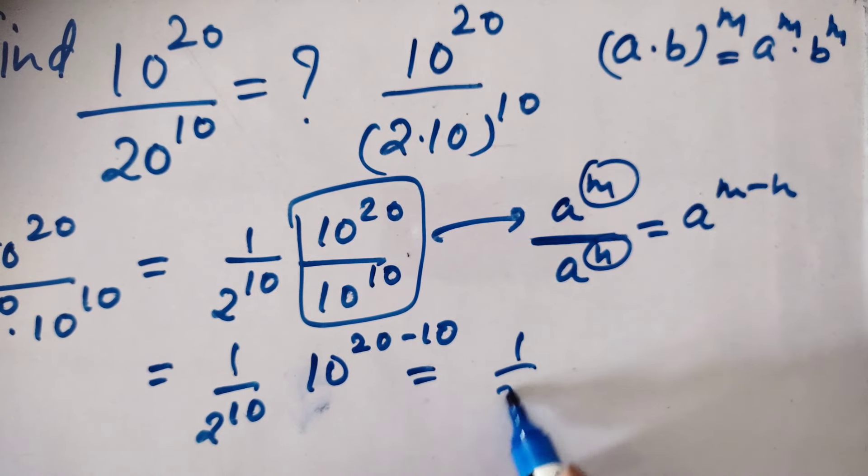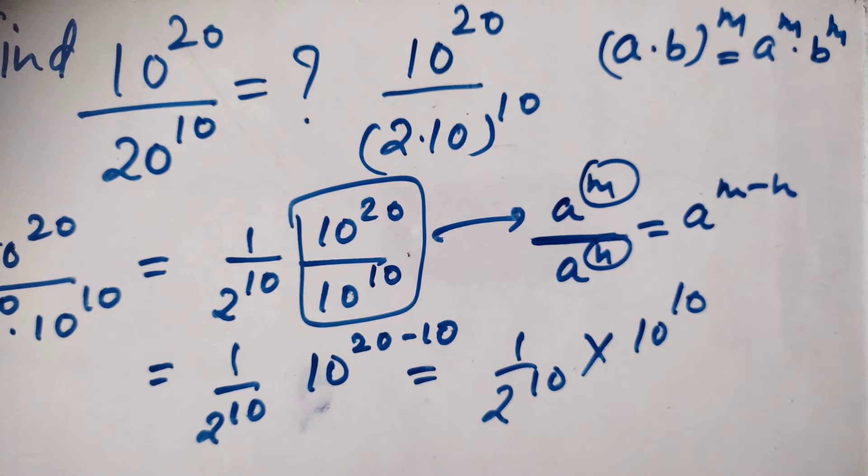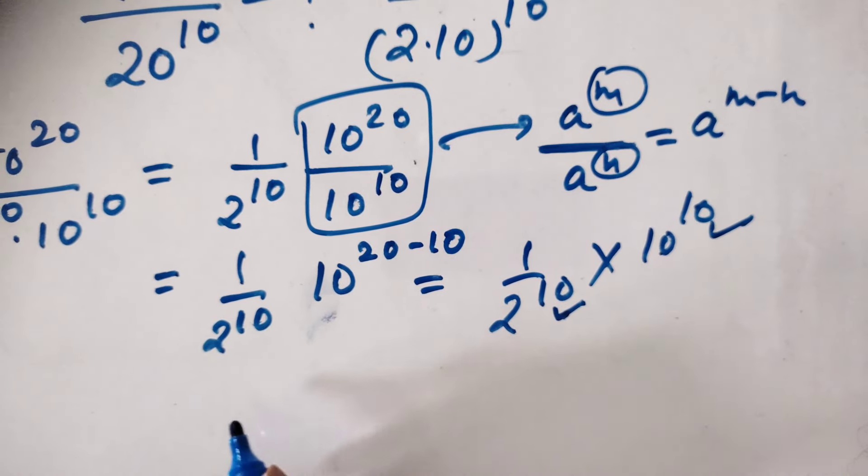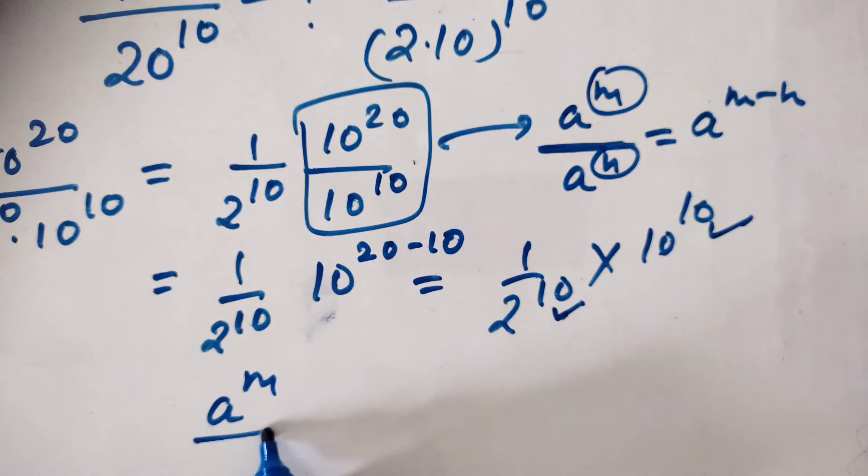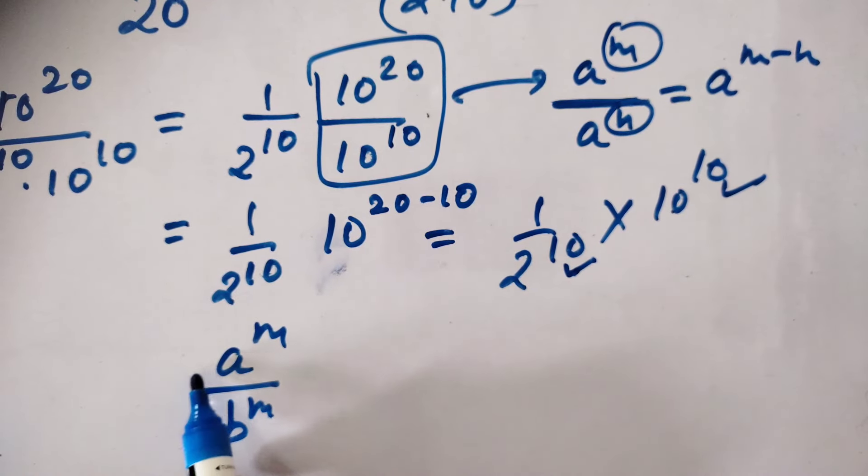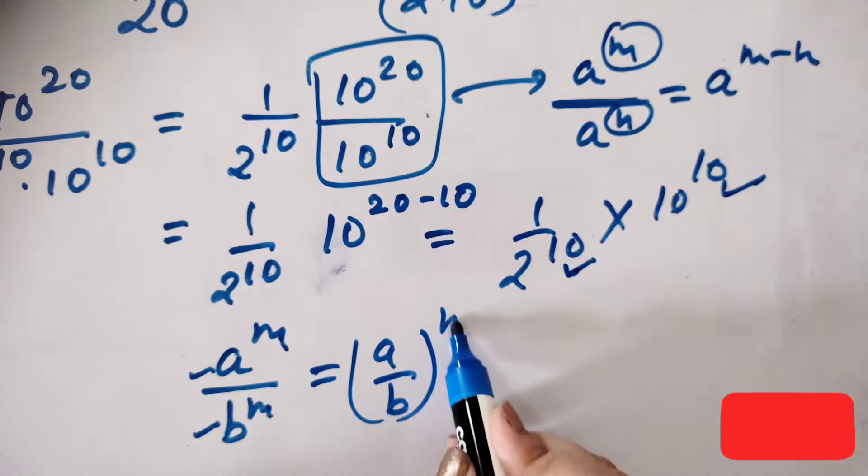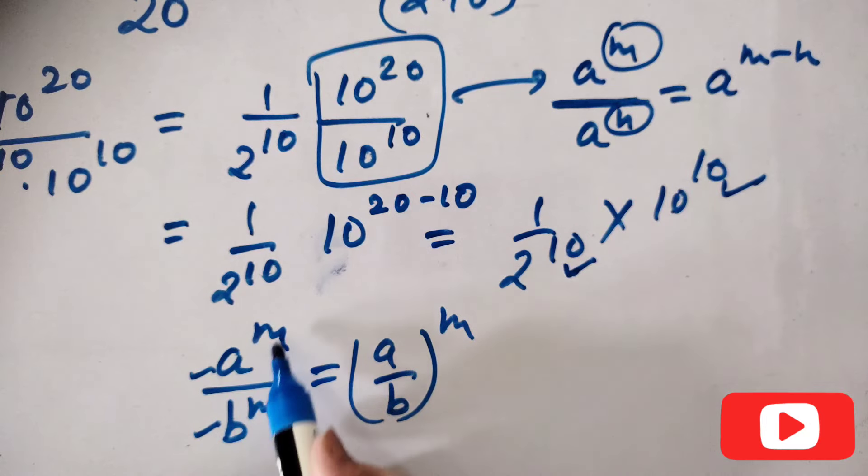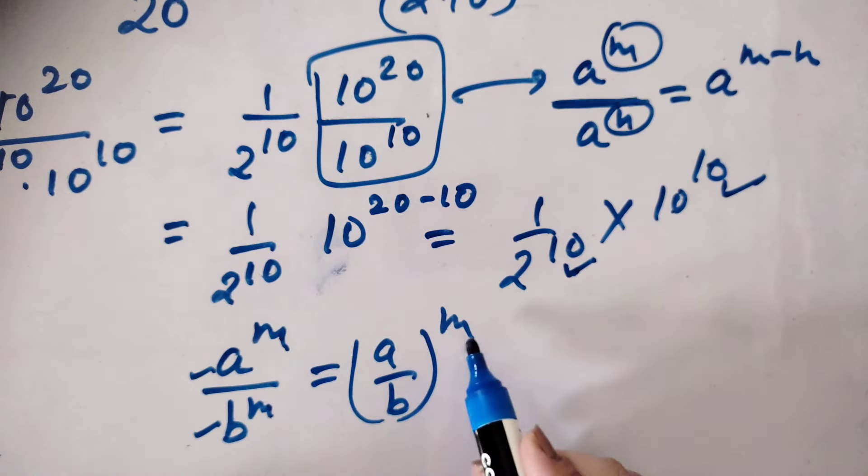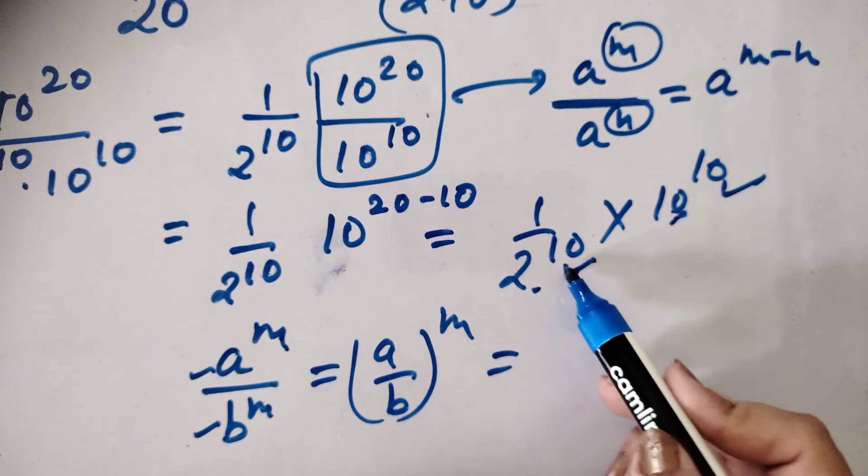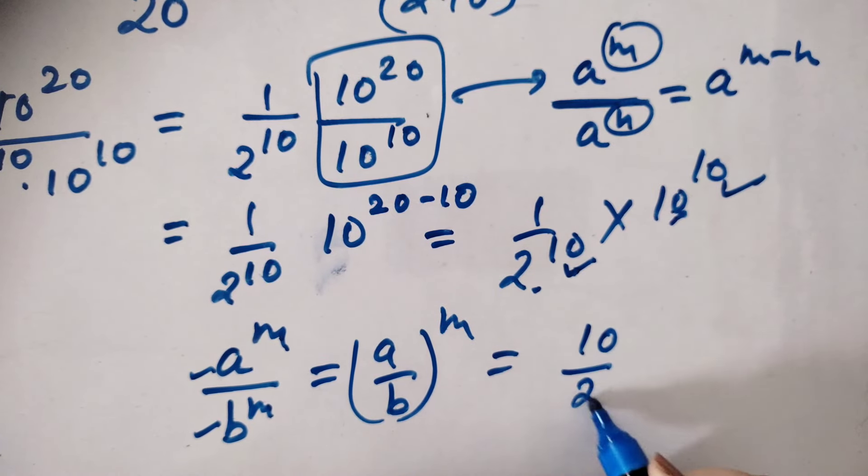Now you can see again we are using the law of exponent, the base are different but power is same. So we are using the law of exponent which law if the base are different, see both base are different but power is same, so we are using a upon b whole power m, we will write a upon b and this m power, we will write whole power m. Similarly base are different and powers are same, so can we write 10 by 2 whole power 10.